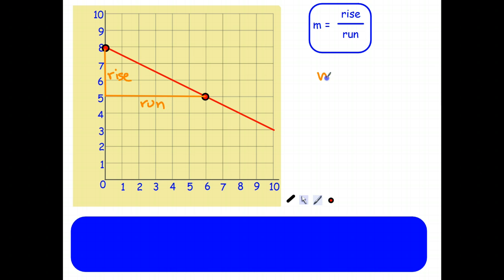Using the same formula, well the rise in this case is not 3, but negative 3. So direction makes a difference. To get from that point to that point we have to go down 3. And then we move to the right, 1, 2, 3, 4, 5, 6. And that's in a positive direction. So horizontally that's positive, and that direction is negative. And negative 3 over 6 is negative 1 half.